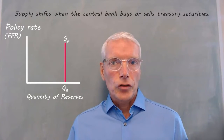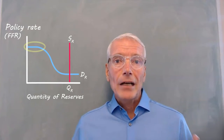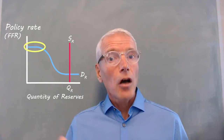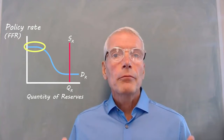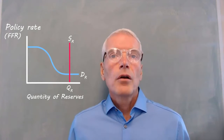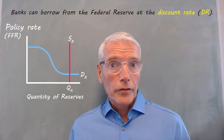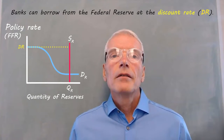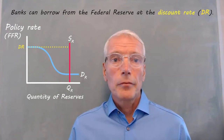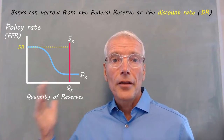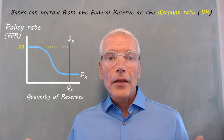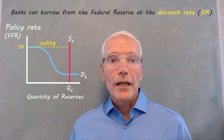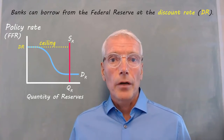The demand for reserves looks something like this. It starts out horizontal because banks have another option for obtaining reserves other than borrowing from commercial banks — they can borrow from the central bank. When banks borrow from the Federal Reserve, the interest rate they pay is called the discount rate. Banks wouldn't demand reserves from other banks at a policy rate higher than the discount rate, because they would rather just pay the discount rate. So the discount rate establishes a ceiling on the rate banks would pay other banks to borrow money.